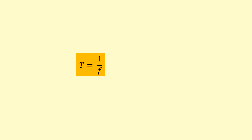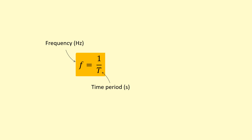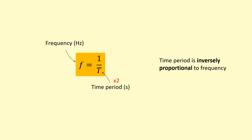Frequency and time period are related through this equation: time period equals one divided by frequency, where time period is normally measured in seconds and frequency in hertz. You can rearrange this to frequency equals one divided by time period. This tells us that time period is inversely proportional to frequency — so if you double the time period, the frequency halves; if you triple the time period, the frequency becomes a third.